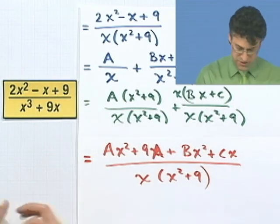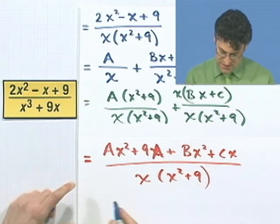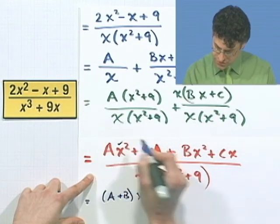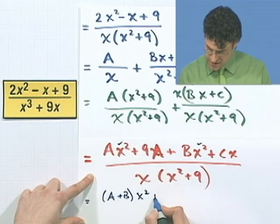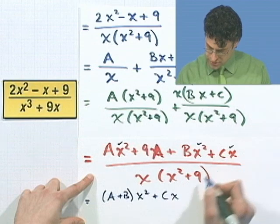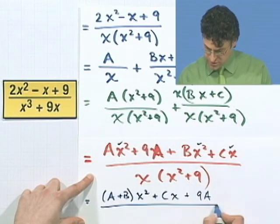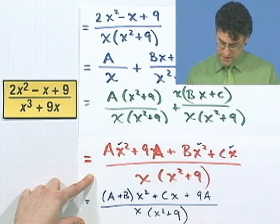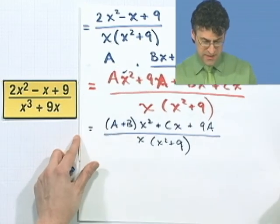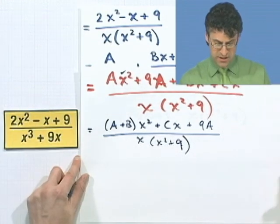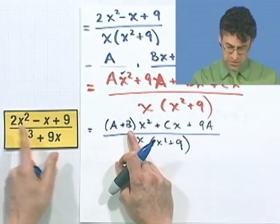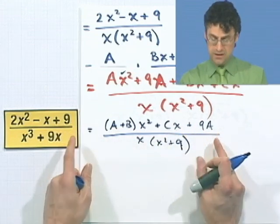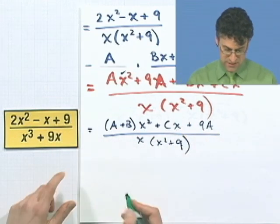And now I again combine like terms. So what do I see? I see this equals a plus b x squared. And then I've got a plus cx plus 9a. And that's all over my common bottom. And what do I know? I know that this has to equal this. So I know that this coefficient has to be 2, this coefficient has to be negative 1, this coefficient has to be 9. And that gives me the ammo to get this going.